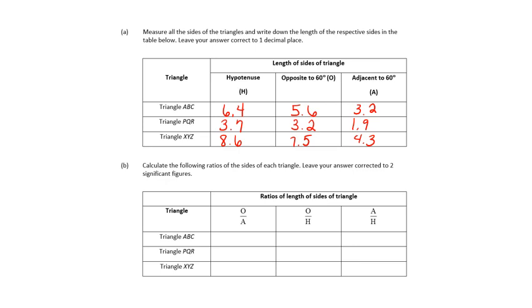The next thing we're going to do: since these are all similar triangles because they have the same angles — they all have 60, 90, and 30 because 30 plus 60 plus 90 is 180 — similar shapes have all the same angles. We're going to find those ratios, starting with opposite over adjacent.